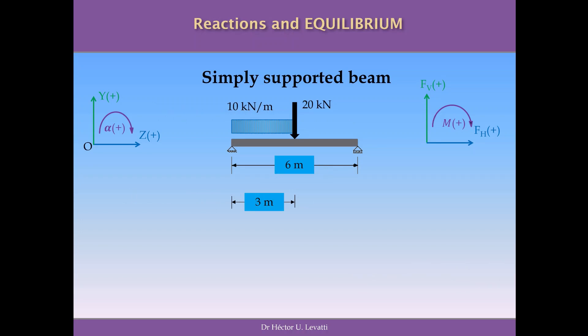We have a simple supported beam, as you can see on the screen, that is subjected to two different loads. There is a uniform distributed load, or UDL, of 10 kN per meter from the start of the structure to the middle across 3 meters of the span, and a punctual load in the middle of the span equal to 20 kN acting downward.